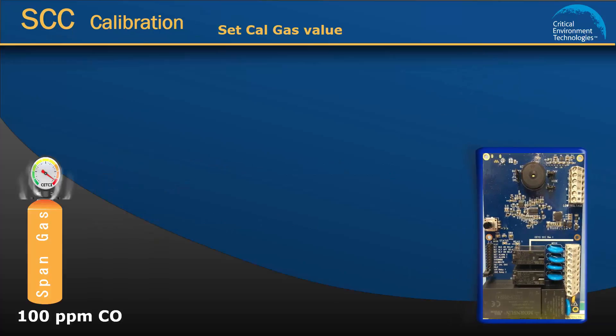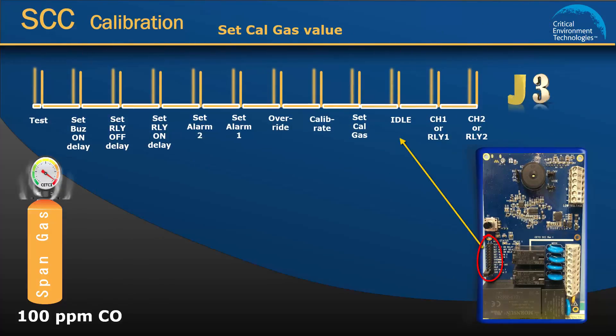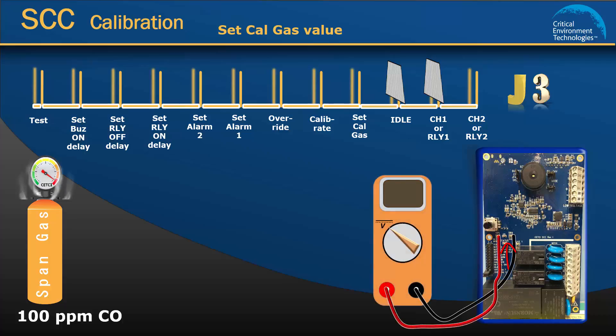Open the SCC and find the jumper bank on the left side of the board. There should be one jumper on idle and one jumper on channel 1. These are the default jumper positions. Find the test points TP1 and TP2 on the board. Attach your voltmeter and keep it attached until the entire calibration procedure is complete.